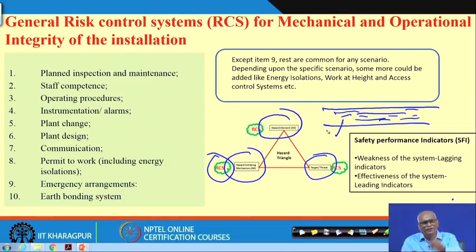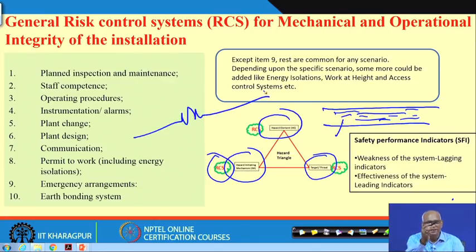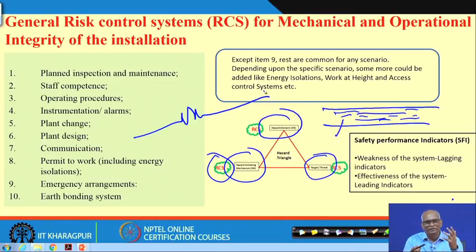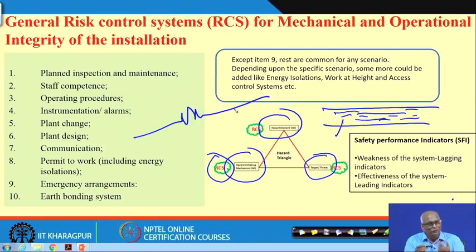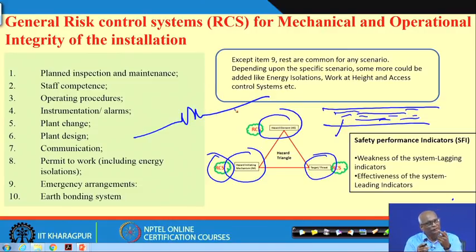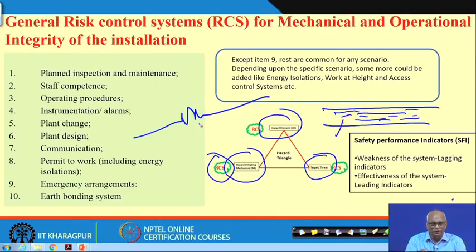If the pipe does not break — as long as you control the pipe from breaking — the hazardous liquid stays within its boundary and does nothing. Like electricity: when it is in the line, nothing is going to happen. For our survival we require electricity, but if it comes out, if you do not make proper connections, or if power comes in while you are working, it will kill. So we have to put risk control systems there also.